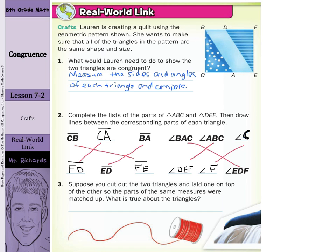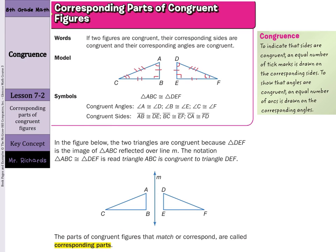Suppose you cut out the two triangles and laid one on top of the other so the parts of the same measures were matched up — they are congruent. Our definition of corresponding parts of congruent figures: if two figures are congruent, the corresponding sides are congruent and the corresponding angles are congruent. To indicate this, we have the statement: triangle ABC is congruent to triangle DEF, using the equal sign with a little squiggly on top.